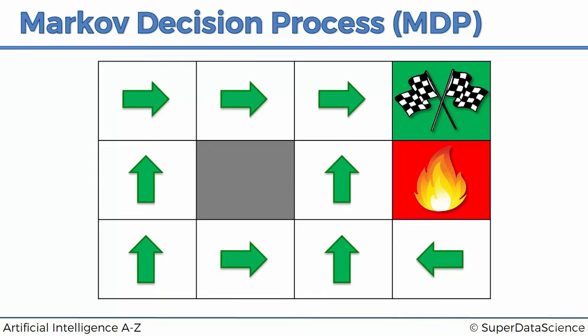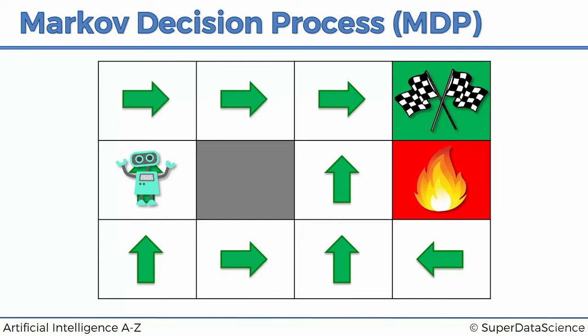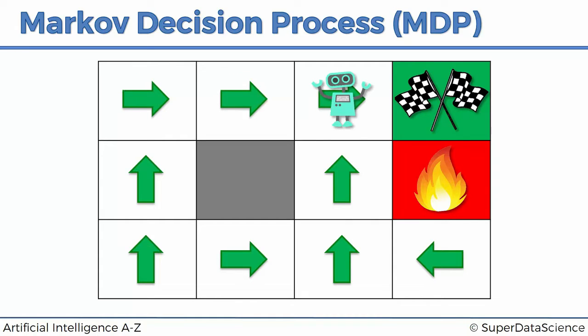Basically what that means is wherever the agent starts — let's say it starts over there — it knows exactly which steps to take in order to get to the finish line. So it just goes up, up, right, right, and done.